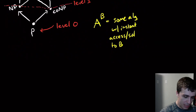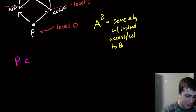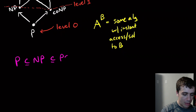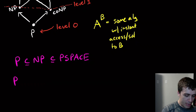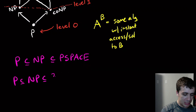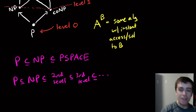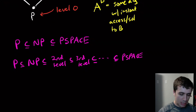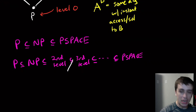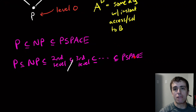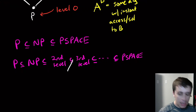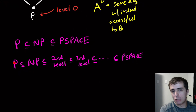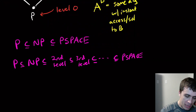So we have that P is a subset of NP, which is a subset of the second level, which is a subset of the third level, and so on — this infinite chain of inclusions — all of which are a subset of PSPACE. The question is: if we can prove that the second level is not equal to the third level, that will separate NP from PSPACE, which is what we believe to be true but haven't proved yet.